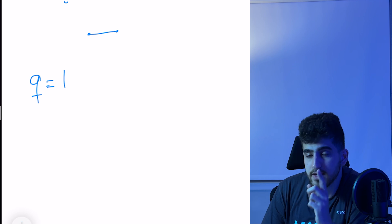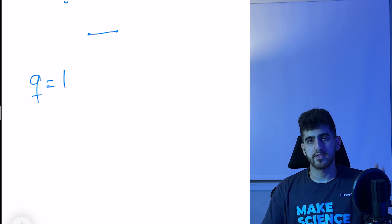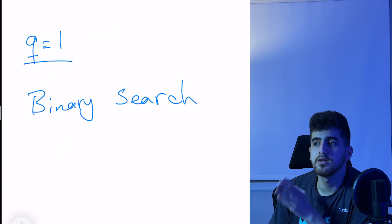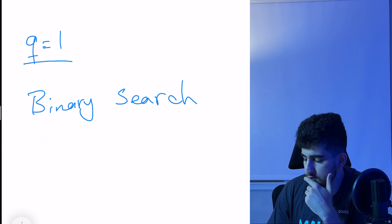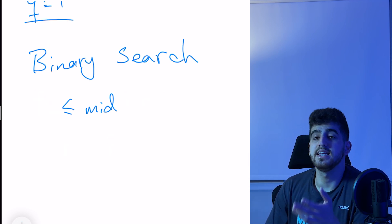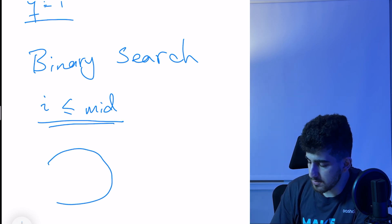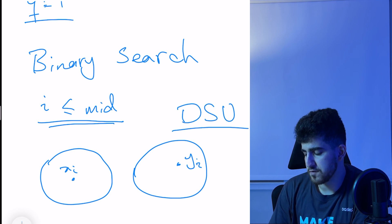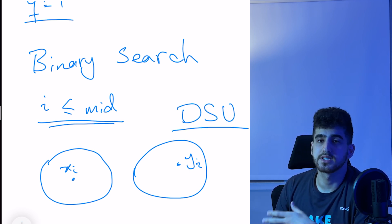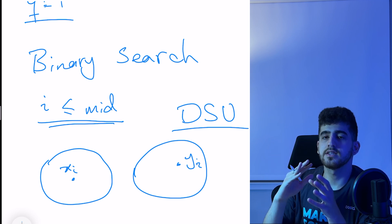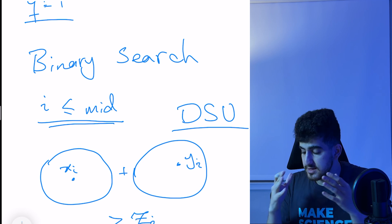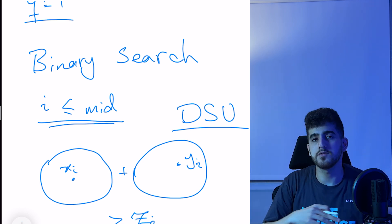Initially assume Q equals one, so we have only one query. We can use binary search over all the edges. Assume the answer is at most mid — we add all edges with indices at most mid and use DSU to find the sizes of the connected components of X_i and Y_i. If they are in the same component, compare that size with Z_i; if different, sum the sizes and compare with Z_i.